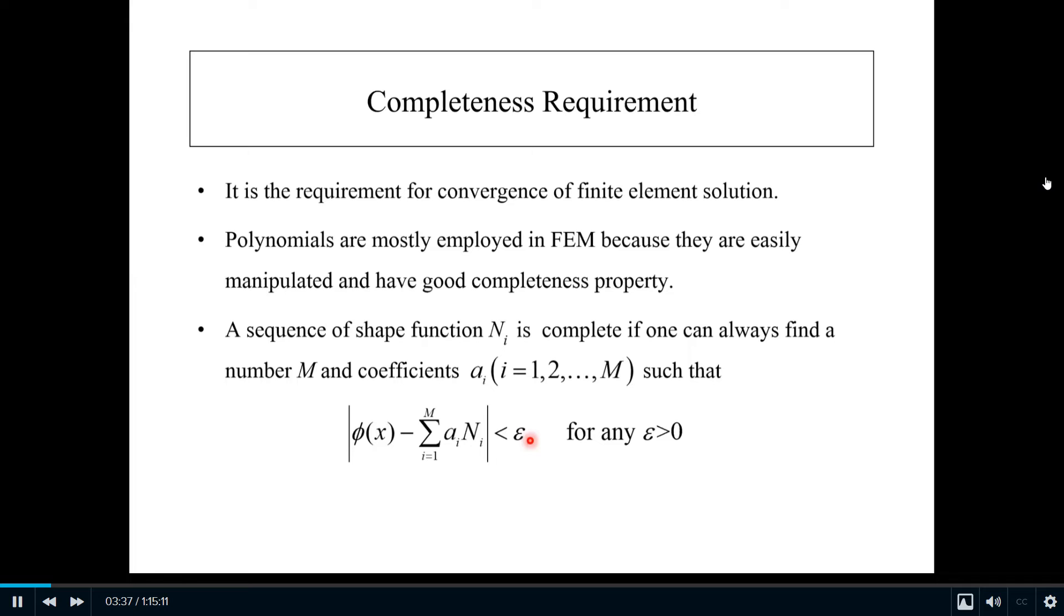If you set epsilon to one number, for example 10 to the power of -3, and I can find coefficient a_i and M terms such that this value is less than 10^-3, that is good. If I set another value of epsilon, say 10^-6, which is much smaller, and I still can find a number M to satisfy this equation—you may need 20, 30, or whatever number of terms—then this shape function N_i has the completeness property.